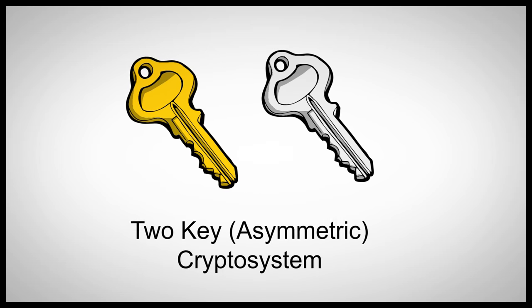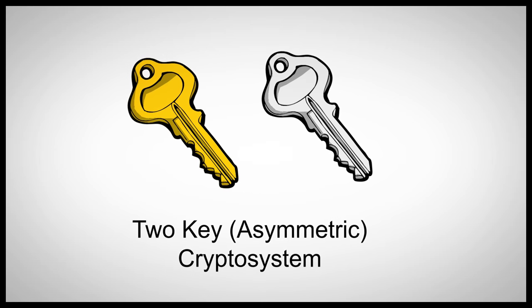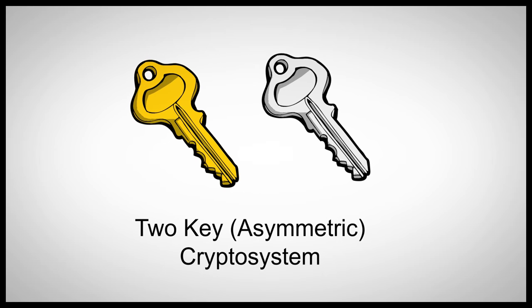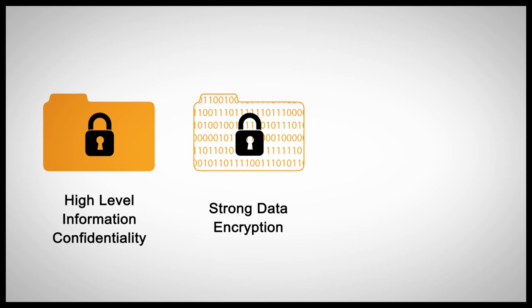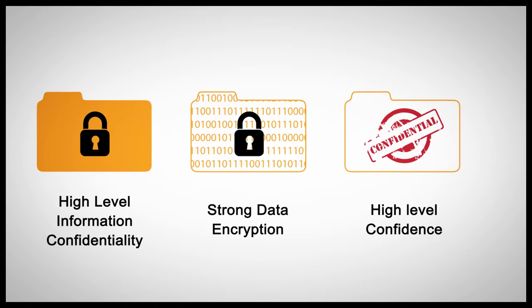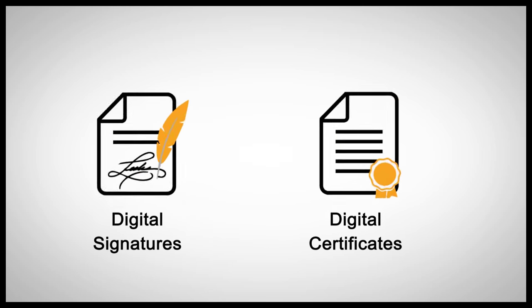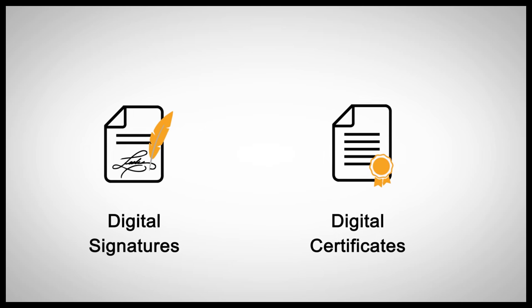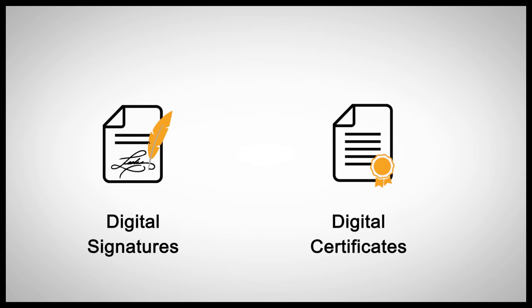PKI is a two-key asymmetric cryptosystem. It is a framework that allows different IT systems to have a high level of information confidentiality through strong data encryption, and a high level of confidence through authentication with digital signatures and digital certificates.